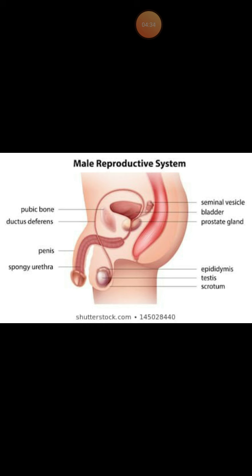Next one is the Cowper's gland. These are two small ovoid glands that are found below the prostate gland.